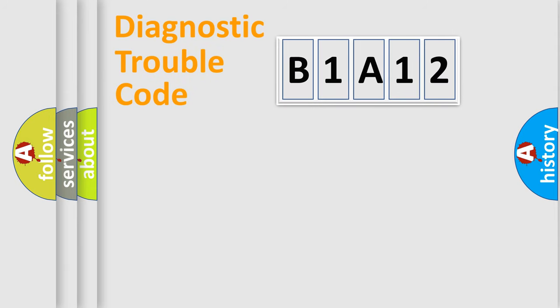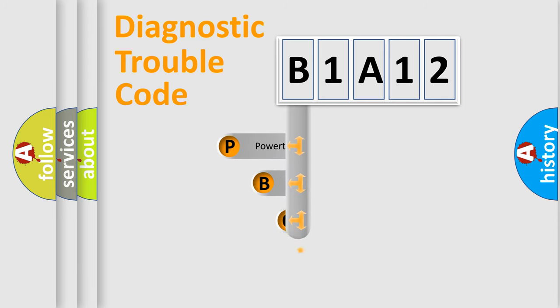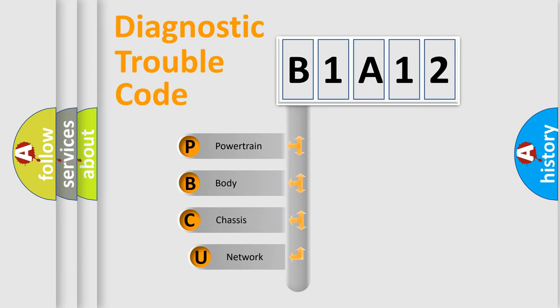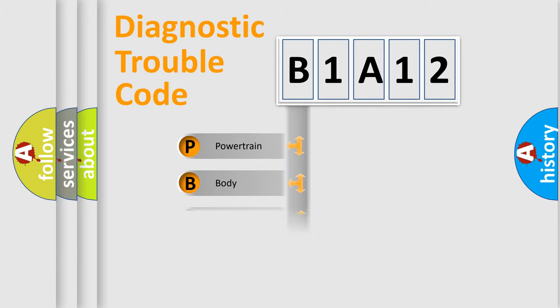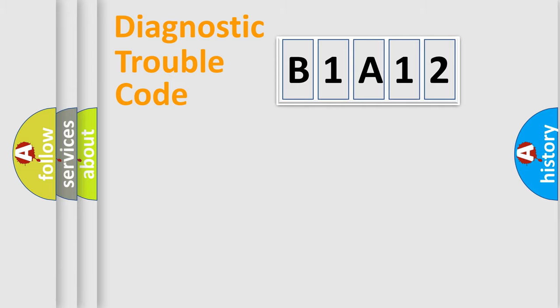First, let's look at the history of diagnostic fault code composition according to the OBD-2 protocol, which is unified for all automakers since 2000. We divide the electric system of an automobile into four basic units: Powertrain, Body, Chassis, and Network. This distribution is defined in the first character of the code.